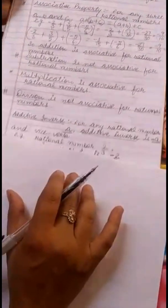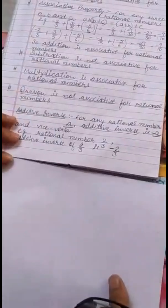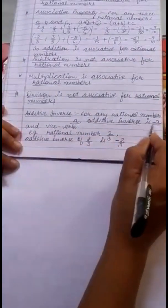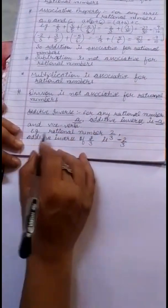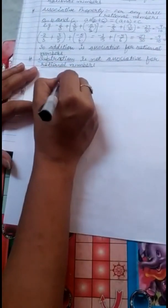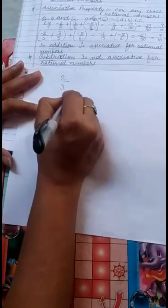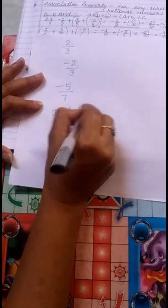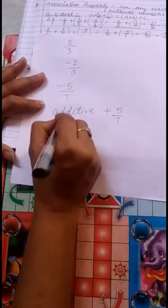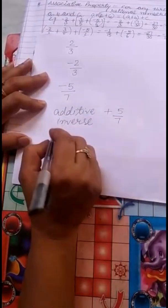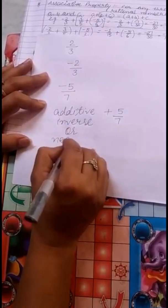Now the next one is Additive Inverse. Additive inverse is actually the negative of a number. For any rational number A, the additive inverse is minus A, and vice versa. For example, the additive inverse of 2 by 3 is minus 2 by 3. For a negative number, such as minus 5 by 7, the additive inverse is plus 5 by 7. So the negative of a number and the additive inverse are the same.